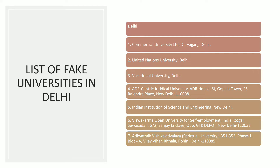Now let's go through the Delhi fake universities one by one. First is Commercial University Limited. Second is United Nation University. Third is Vocational University. Fourth is ADR Centric Judicial University. Fifth is Indian Institute of Science and Engineering. Sixth is Vishwakarma Open University for Self-Employment. Seventh is Adhyatmik Vishwavidyalaya, also known as Spiritual University. These are the seven fake universities in Delhi — you must remember all these names.